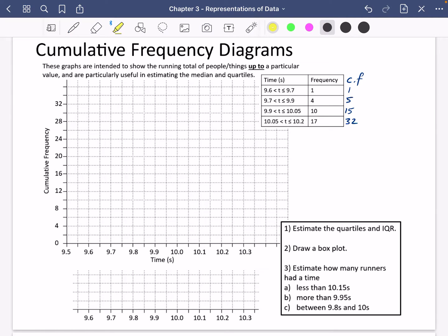Now when you plot these, you should remember from GCSE that you're going to be plotting the upper boundaries with these bits here, because we're saying how many people or how many things have gone up to that top value.